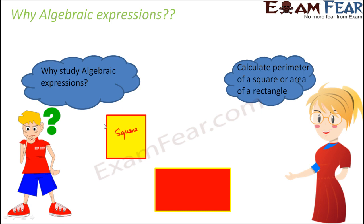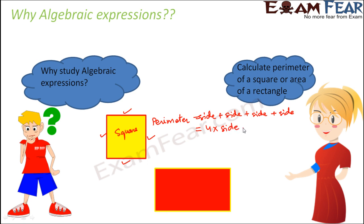This is a square which has all its sides equal. How do you find the perimeter of the square? The perimeter is nothing but the total boundary. So the total boundary would be the length of this side plus this side plus this side plus this side — that is, side added four times, because there are four equal sides. This is nothing but 4 into side. Now let us assume that the length of each side is L. So we can say that the perimeter of the square is given by 4L. As you keep changing the value of L, the perimeter keeps changing.